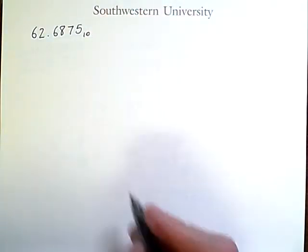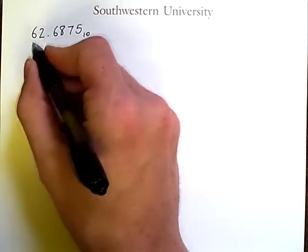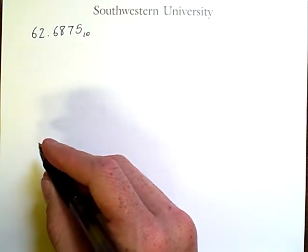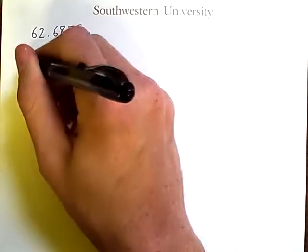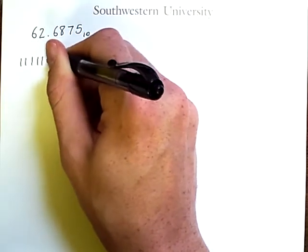Well, we have to deal with this decimal point somehow. Now, we can convert 62 into binary, and you can try that on your own, but you should find that it comes out to 111110.